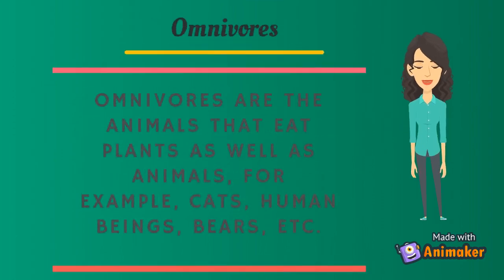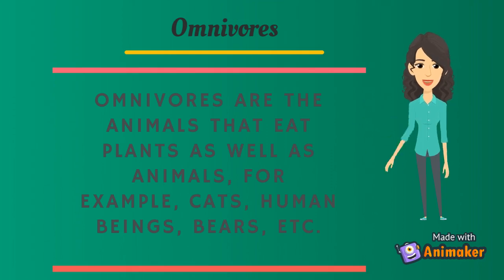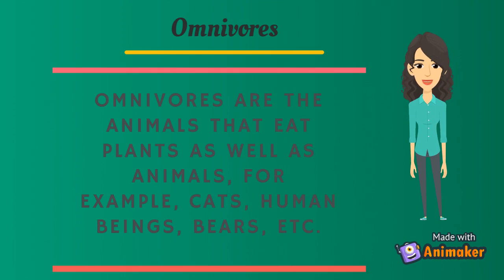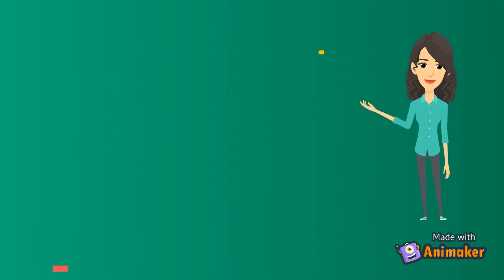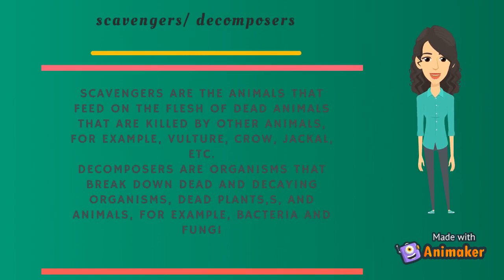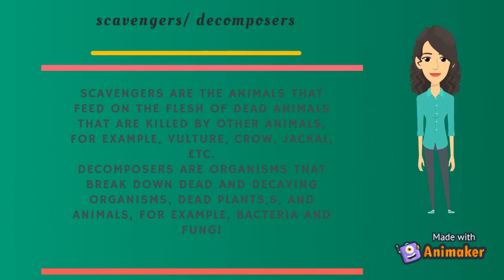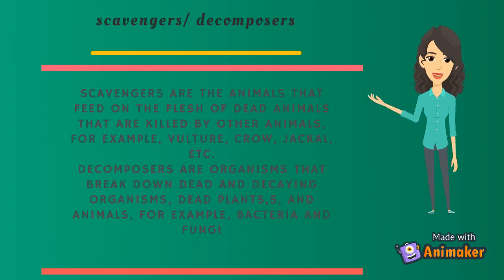Omnivores are animals that eat plants as well as animals, for example, cats, human beings, bears, etc. Scavengers are animals that feed on the flesh of dead animals that are killed by other animals, for example, vulture, crow, jackal, etc.